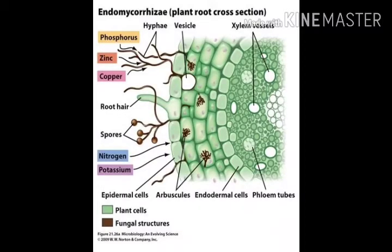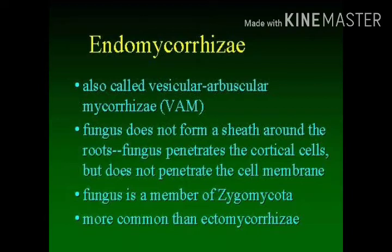Some hyphae of the mycorrhizal fungus penetrate into the root and form the Hartig net in the intercellular space of the root cortex. The brownish epidermal cell structure visible here represents the endomycorrhizae. Endomycorrhizae are also called vesicular arbuscular mycorrhizae, or VAM in short. The fungus does not form a sheet around the roots, but penetrates the cortical cell without penetrating the cell membrane.